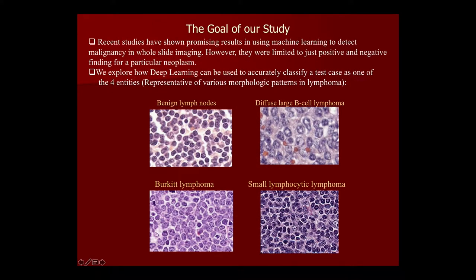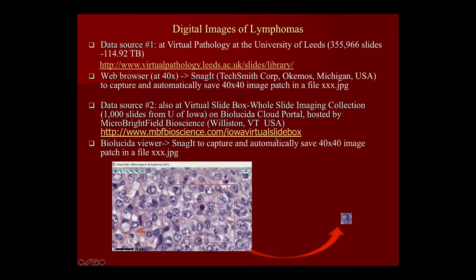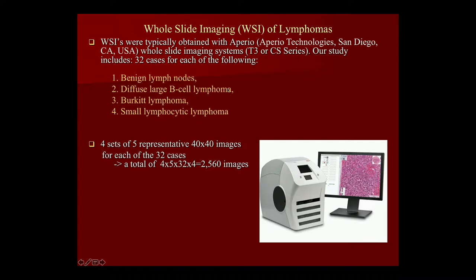The goal of our study is to use deep learning to diagnose four different types of lymphoma: benign lymph node, diffuse large B-cell lymphoma, Burkitt lymphoma, and small lymphocytic lymphoma. Data was obtained from two sources — the University of Leeds and the University of Iowa — comprising 355 slides from the first source and 1,000 slides from the second. We used Snagit software to save 40×40 images in JPEG format, obtained via Aperio instrumentation. We used four representative 40×40 images per case across 32 cases, giving a total of 2,560 images.